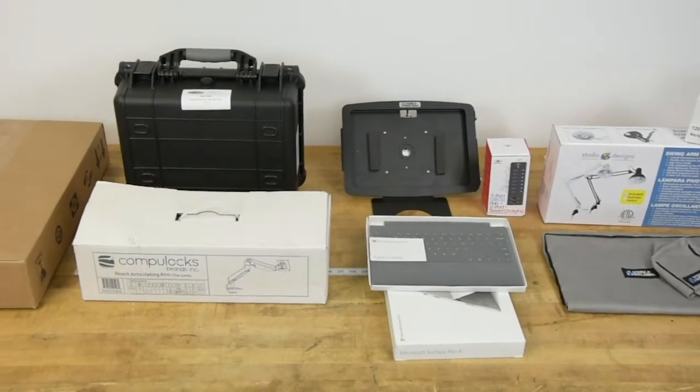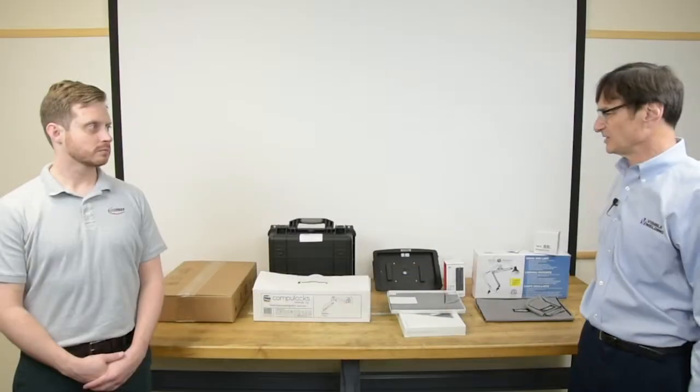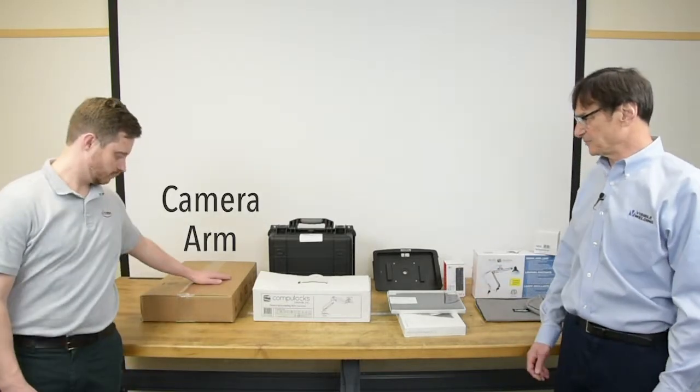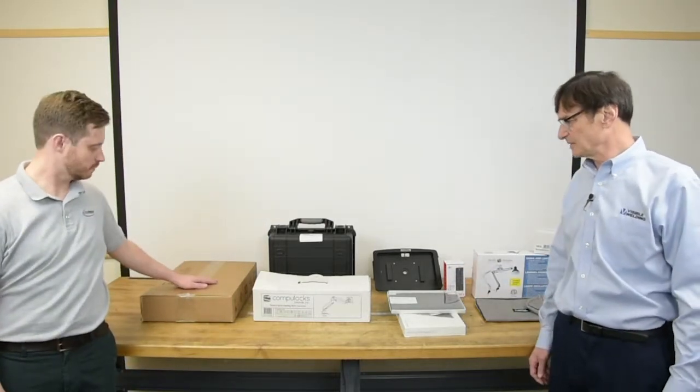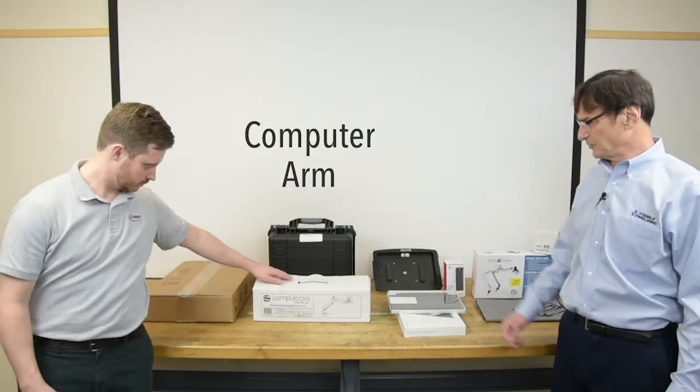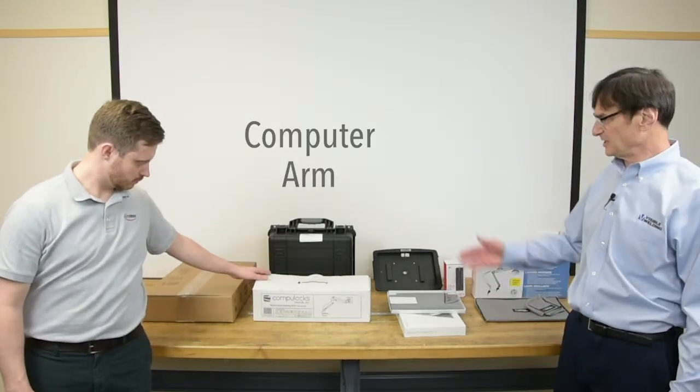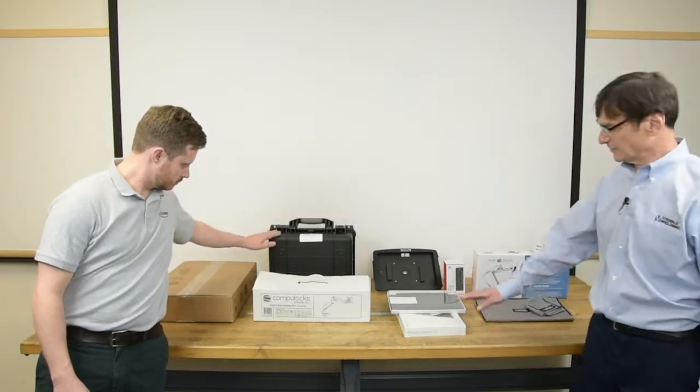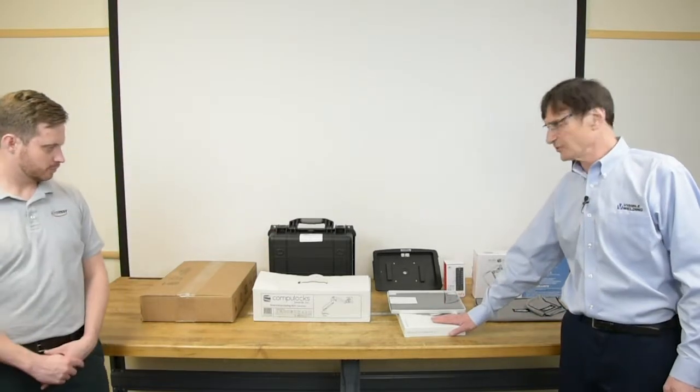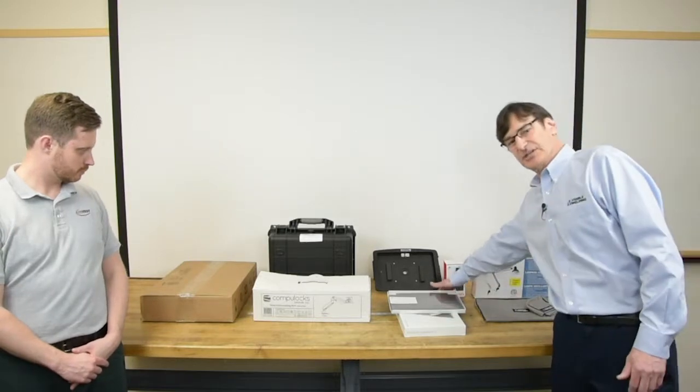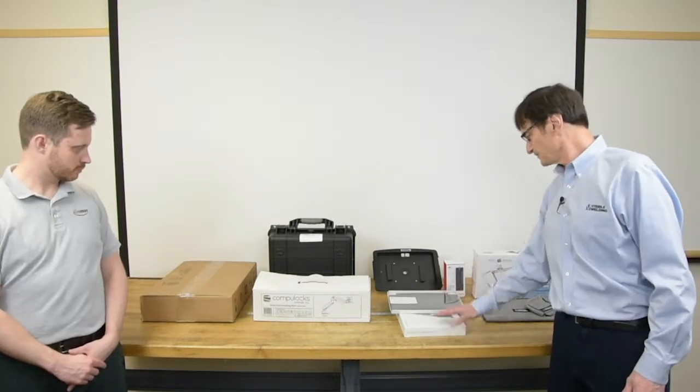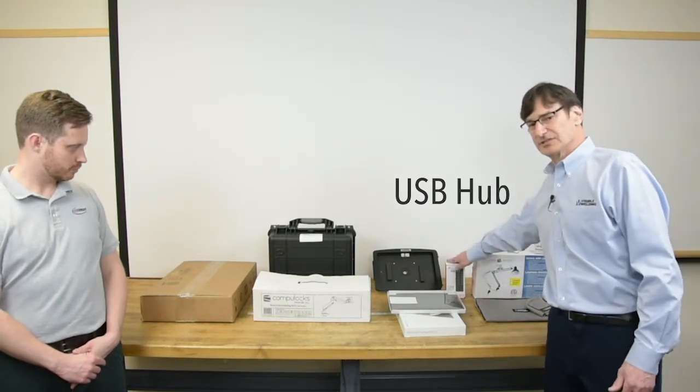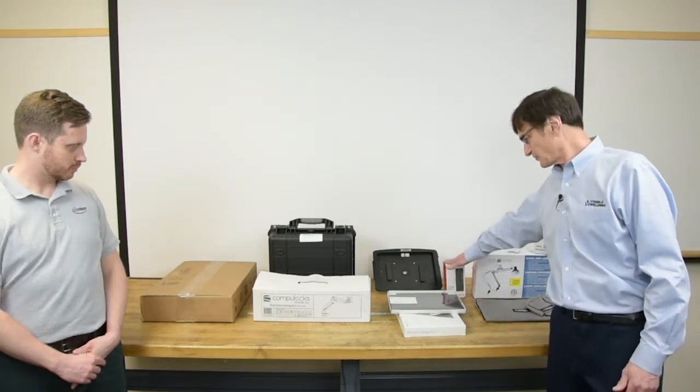We've taken all the components out of the box and laid them out on the table here. Let me tell you what you're going to see. First we have the arm for the camera, and that's in that brown box. We also have an arm for the computer in the white box. Behind that, in that protective case, is the actual camera, the star of the show. Then over here, we have the Microsoft Surface Pro computer, and a keyboard, and a steel case that we're going to put it in and put it on the table.